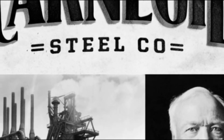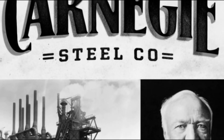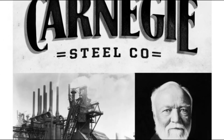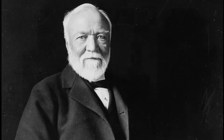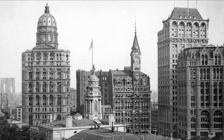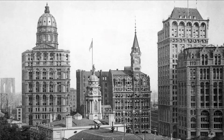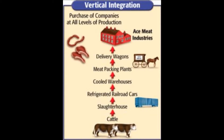In 1875, Carnegie perfected the Bessemer process of making steel and started mass-producing it. Carnegie tweaked the Bessemer process so that he could mass-produce steel beams, making it possible for skyscrapers to be constructed taller than before. He believed in vertical integration, where a company owns all parts of the process.